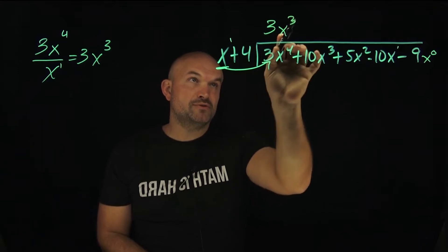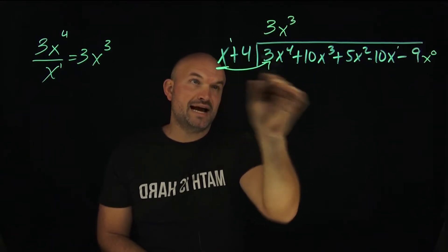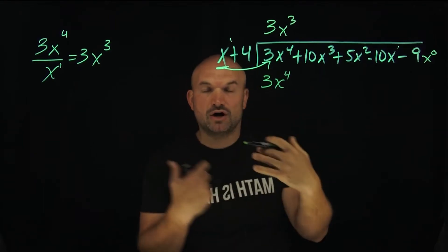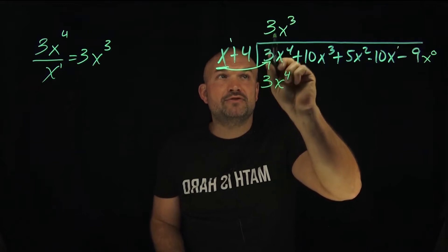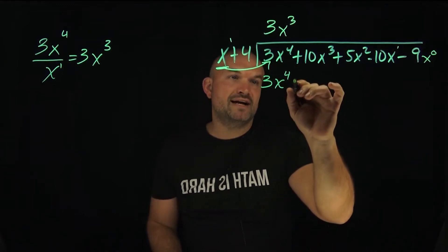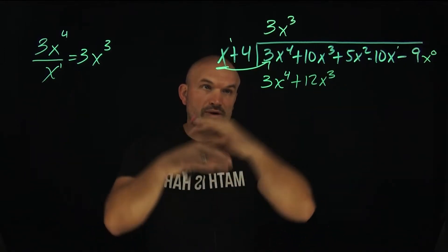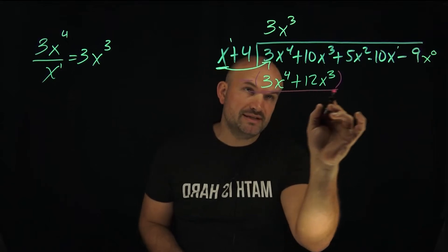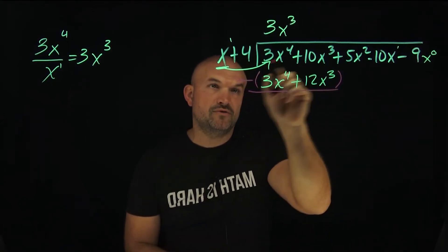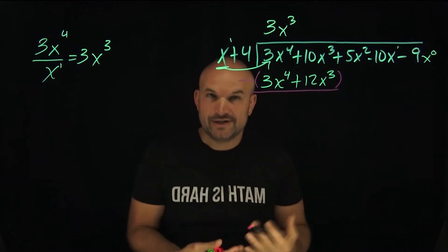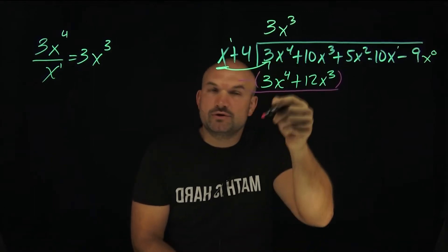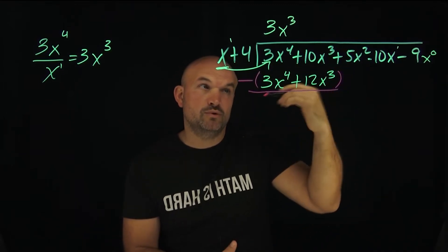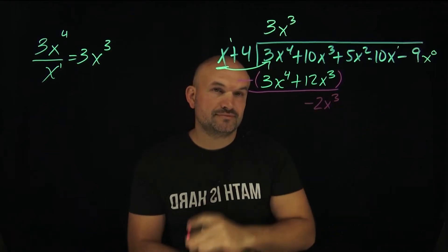Now we multiply 3x cubed times our whole divisor. 3x cubed times x gives us back 3x to the 4th — and whenever you multiply back, you should get the exact same expression, because our goal is to subtract that term out. Then 3x cubed times 4 gives us positive 12x cubed. When subtracting the rows, always use parentheses to be careful with negatives. 3x to the 4th minus 3x to the 4th is 0. Then 10x cubed minus 12x cubed gives us negative 2x cubed.